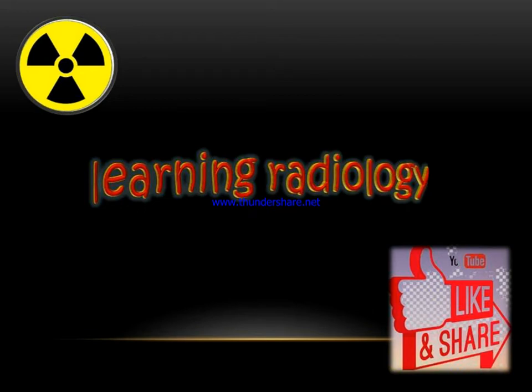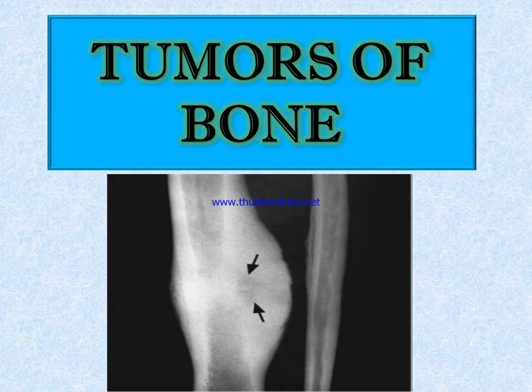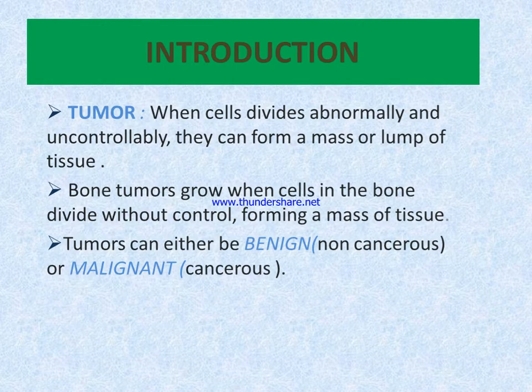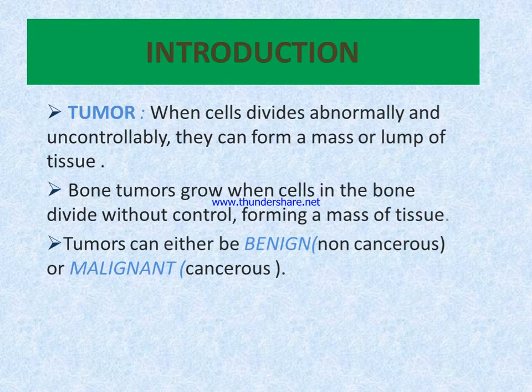Welcome to Learning Radiology. Today's topic is tumors of bone. When cells divide abnormally or uncontrollably, they can form a mass or lump of tissue known as a tumor. When cells in bone divide without control, forming a mass of tissue, it is called a bone tumor.